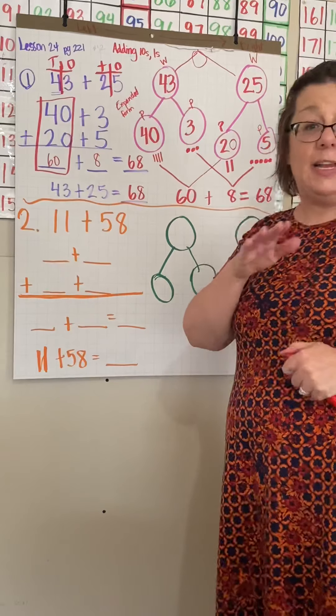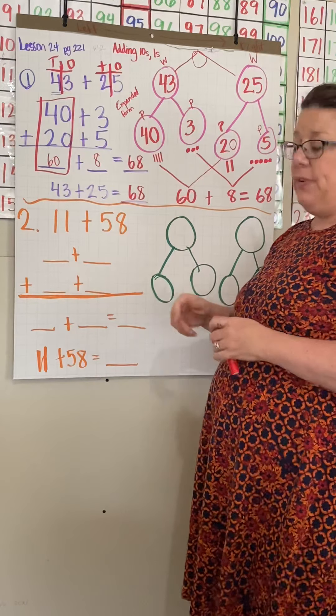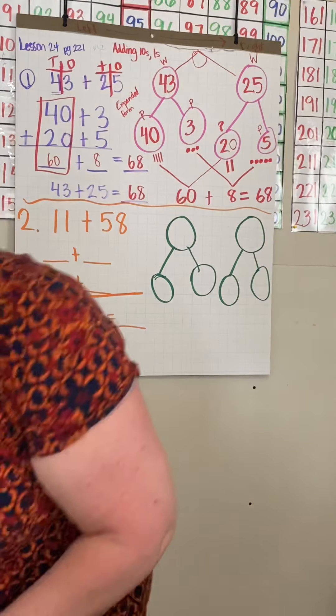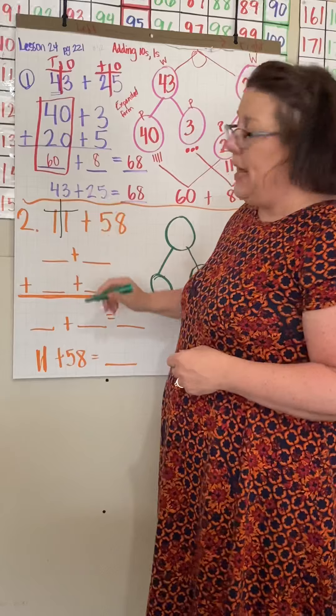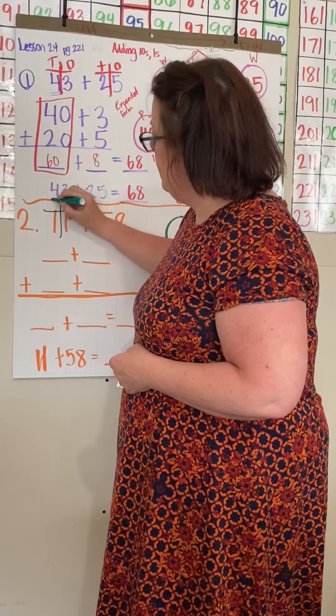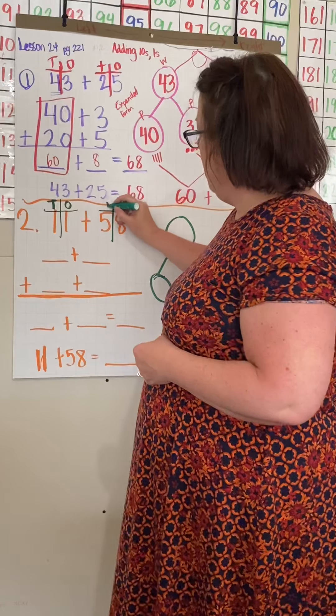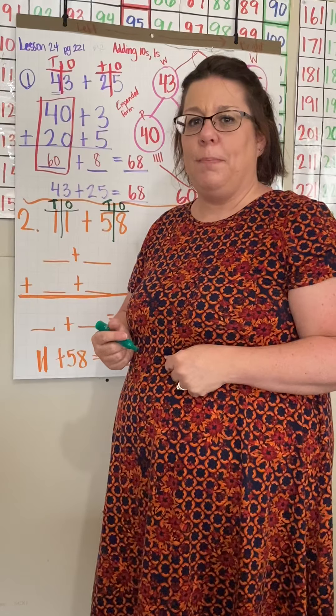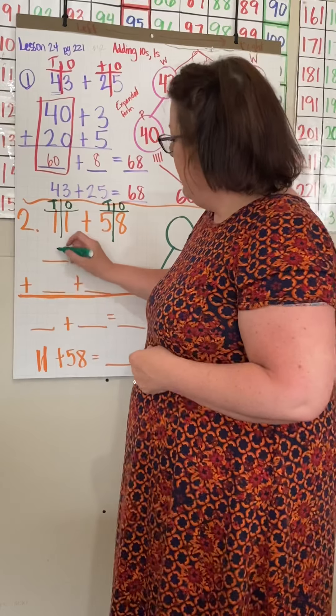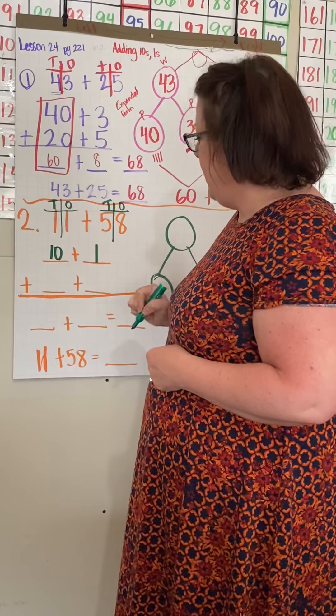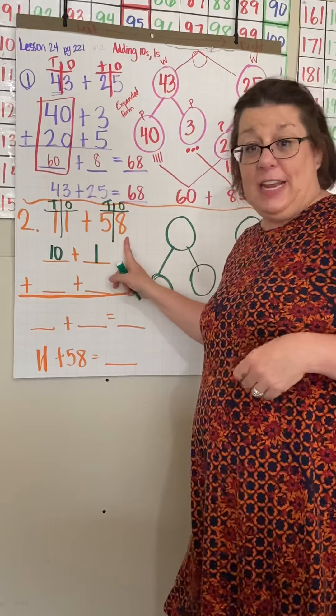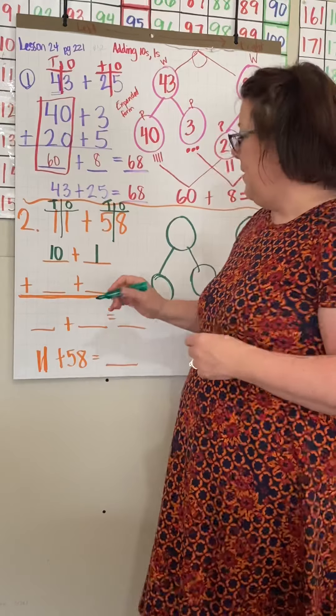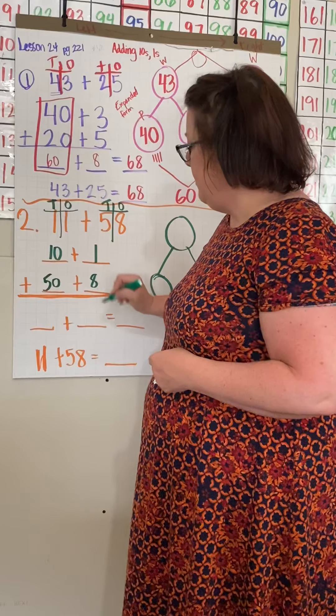So we're moving on to our last problem for right now. Now we have 11 plus 58. Remember we always want to check and divide out. I'm going to divide my number by its place value, right? I have my tens and my ones. I have 11. So what is 11 in expanded form? 10 plus 1, right? So I have 10 plus 1.